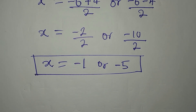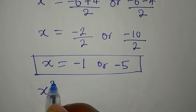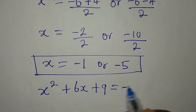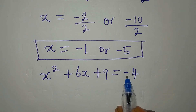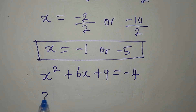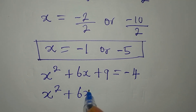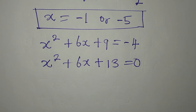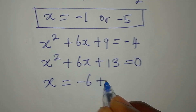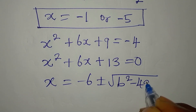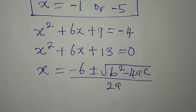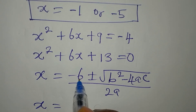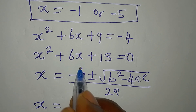Now I go back to the equation I left out. For the negative 4 case: x squared plus 6x plus 9 equals negative 4, so x squared plus 6x plus 9 plus 4 equals 0, giving x squared plus 6x plus 13 equals 0. Applying the quadratic formula again with a equals 1, b equals 6, c equals 13.